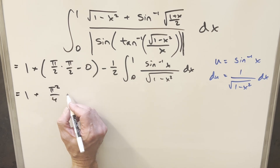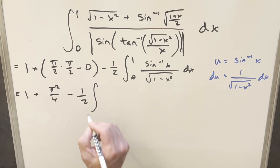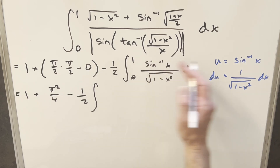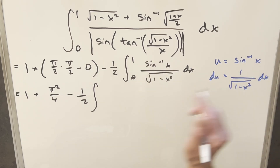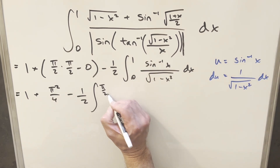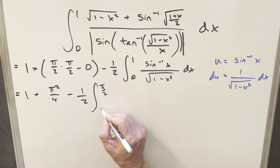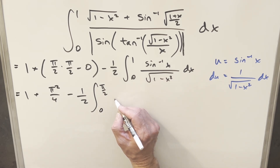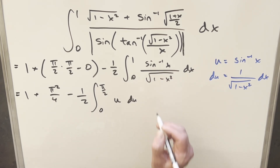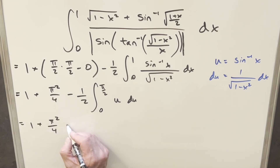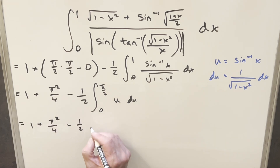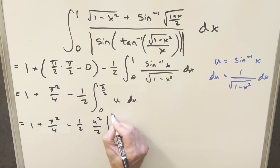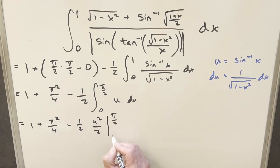We have 1 + π²/4 so far. With u = arcsin(x), updating the bounds: at x = 1, u = π/2; at x = 0, u = 0. The integral transforms into just ∫u du from 0 to π/2, which equals u²/2, evaluated from 0 to π/2.